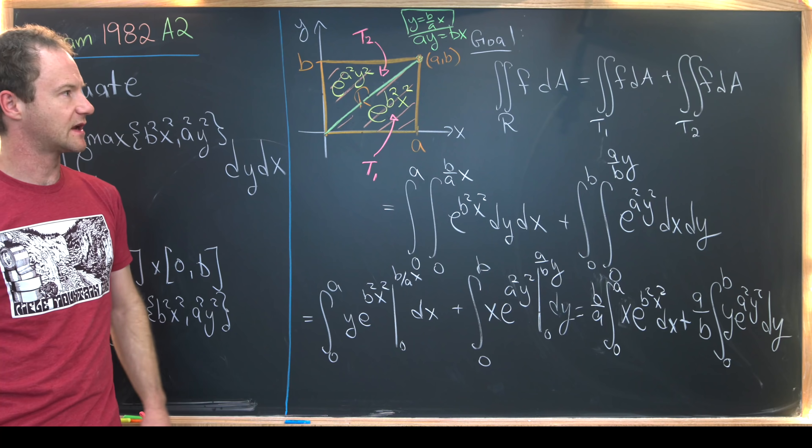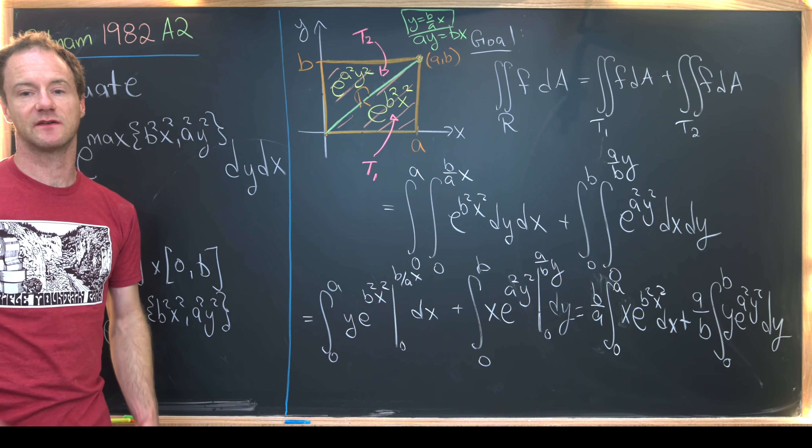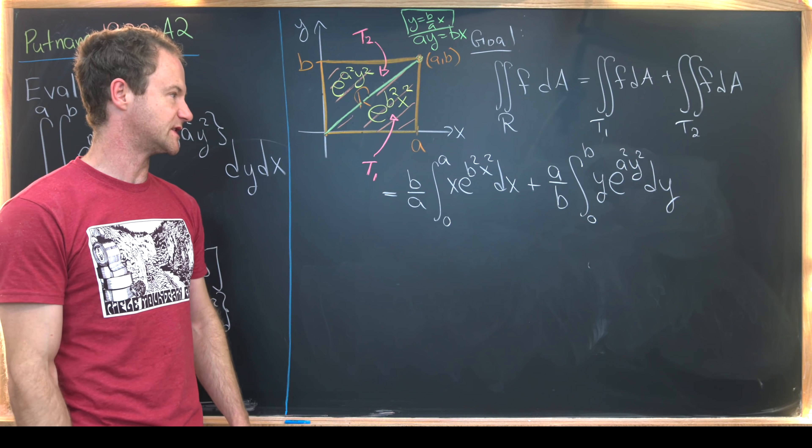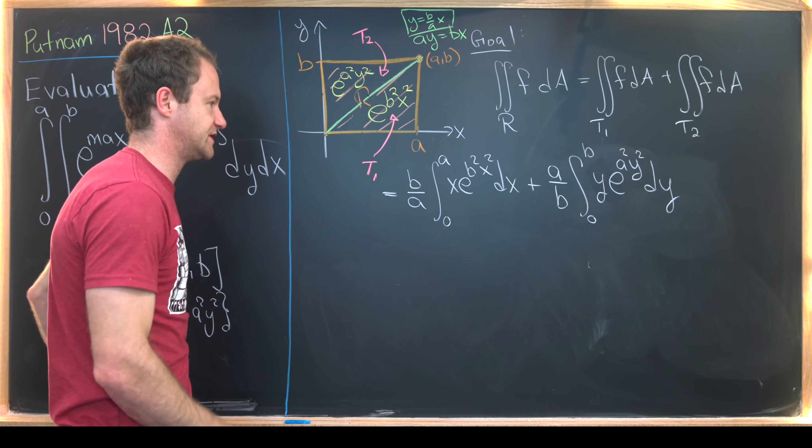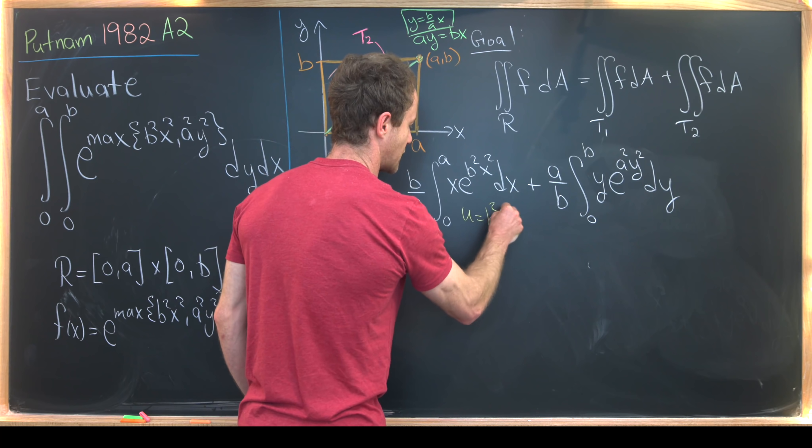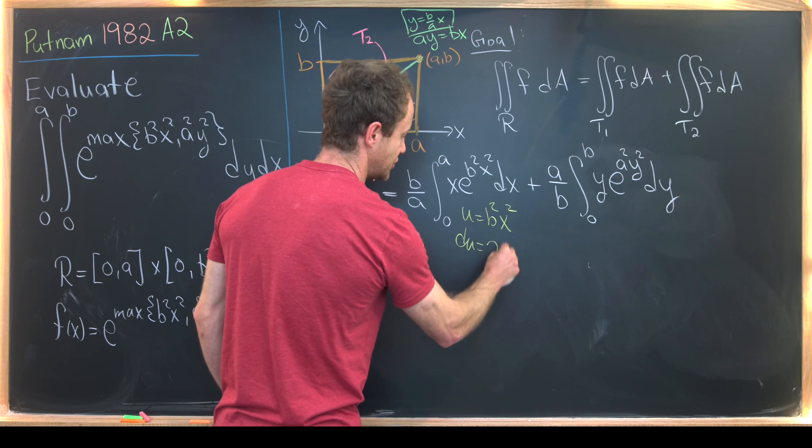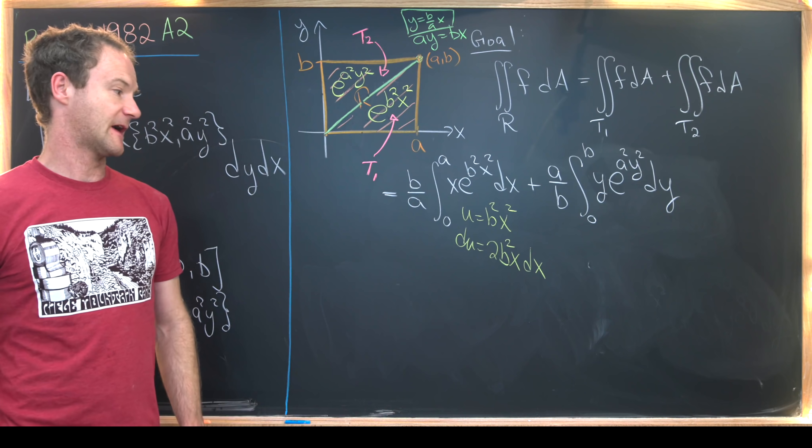So we're kind of running out of room. Let's maybe get rid of the extra stuff and we'll finish it off. On the last board, we got this down to the following sum of two single integrals. These are fairly straightforward using u substitution. So maybe here we could let u equal b squared x squared. That means du is two times b squared times x dx. Like that.